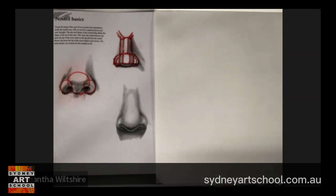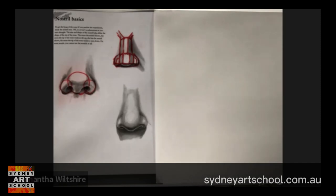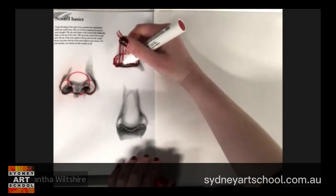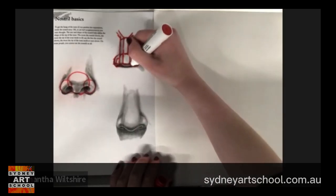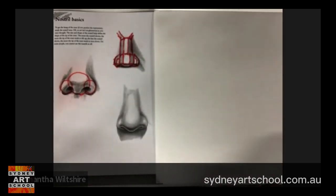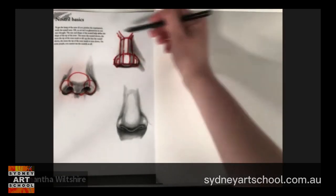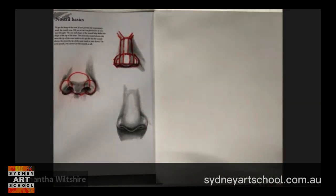We know that if we touch our nose we're going to be able to feel the top and the sides of the bridge of our nose. We know that we're going to be able to touch and feel that underneath shelf of our nose where our nostrils are going to sit. We can also create the dip for our nostrils. So I've mapped in what I think that's doing in terms of the way that it travels in space — I've given myself a better understanding of how that's going to work.